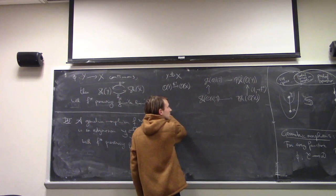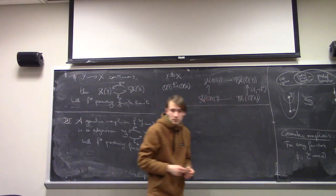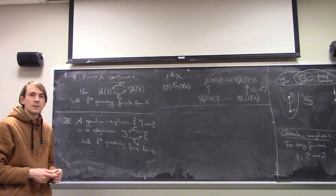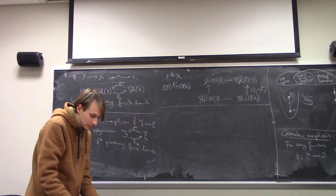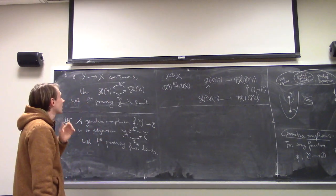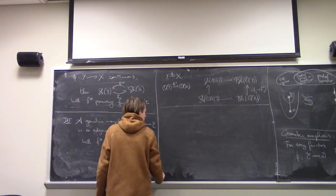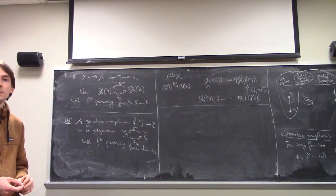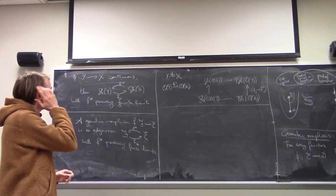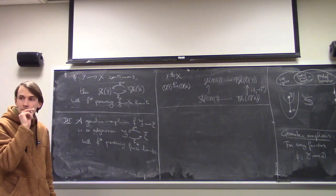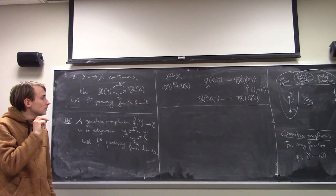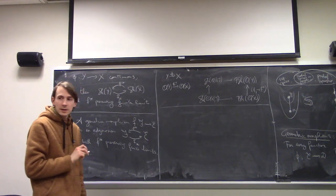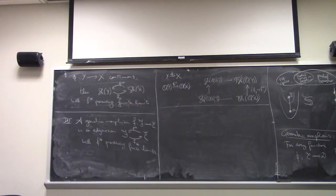His question is why don't you take the right Kan extension? The reason that doesn't work is because it doesn't preserve finite limits, so it can't be a right adjoint. You can't follow the right adjoint lower star by sheafification — that won't give you an adjoint.